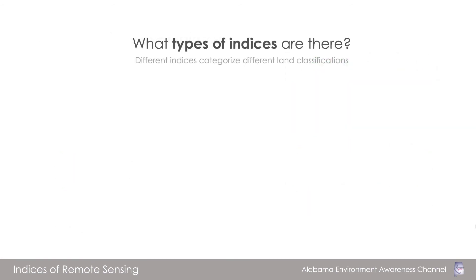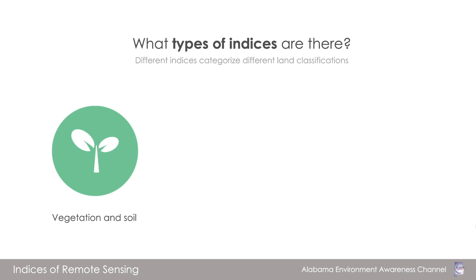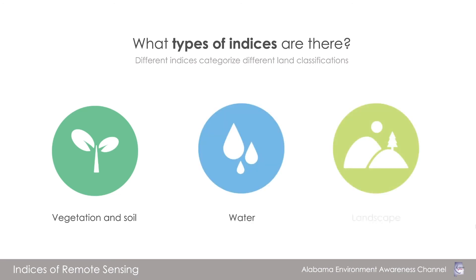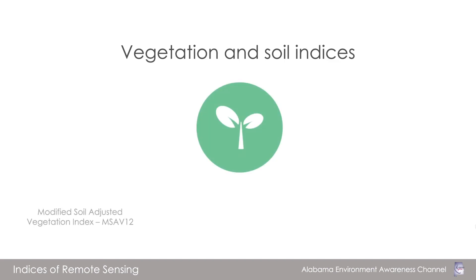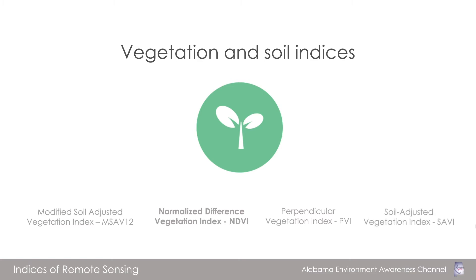So, what are all the different indices? Among the different indices analyzed from satellite images, some popular ones are vegetation and soil indices, water indices, and landscape indices. Different indices help categorize different land classifications such as vegetation, mining, forest, bare soil, pasture, water surfaces, and industrial areas. There are various types of vegetation and soil indices, such as the Modified Soil Adjusted Vegetation Index, Normalized Difference Vegetation Index (NDVI), Perpendicular Vegetation Index, and Soil Adjusted Vegetation Index. Among all these, NDVI is the most popular and widely used, so let's talk about it.